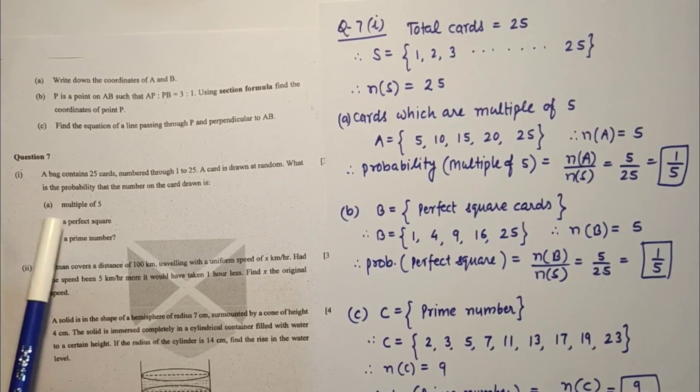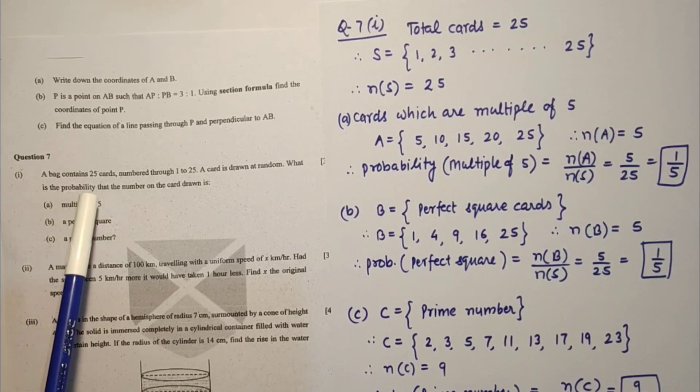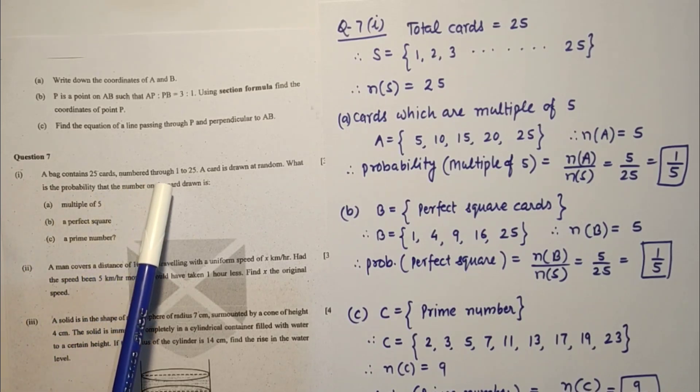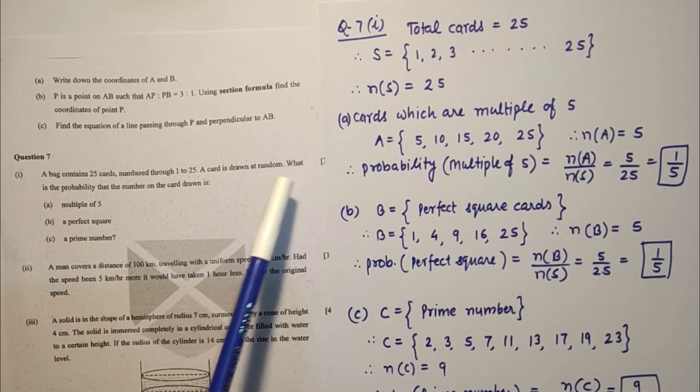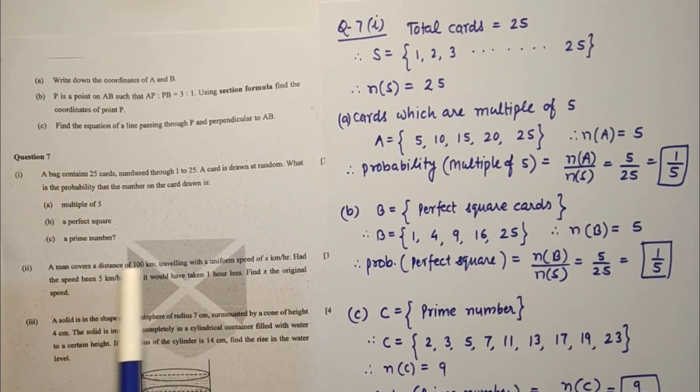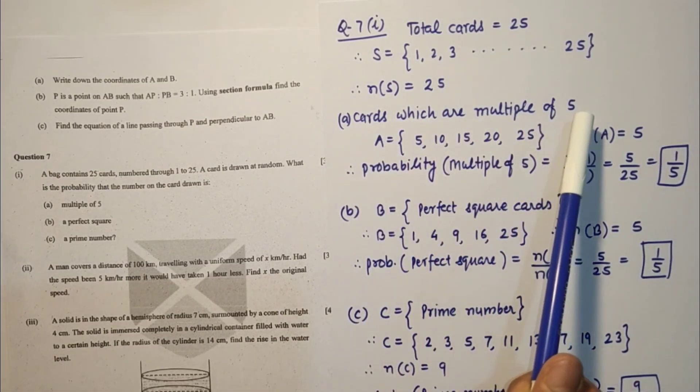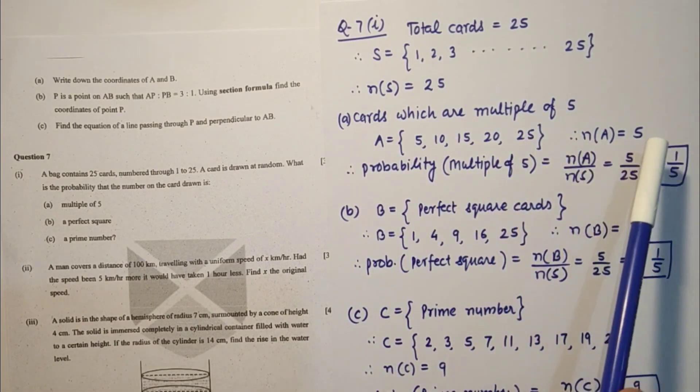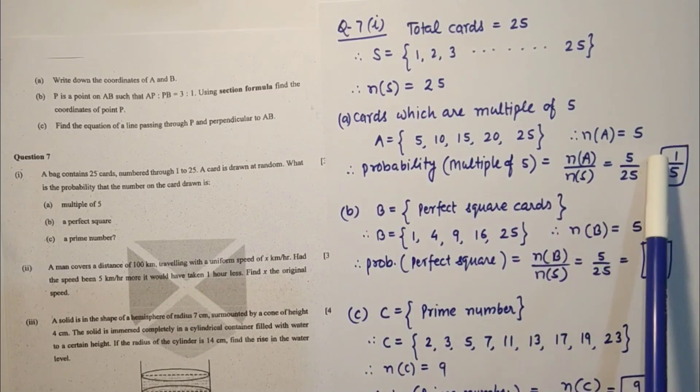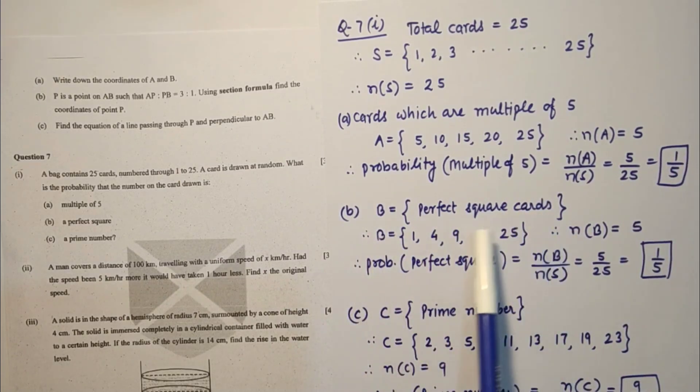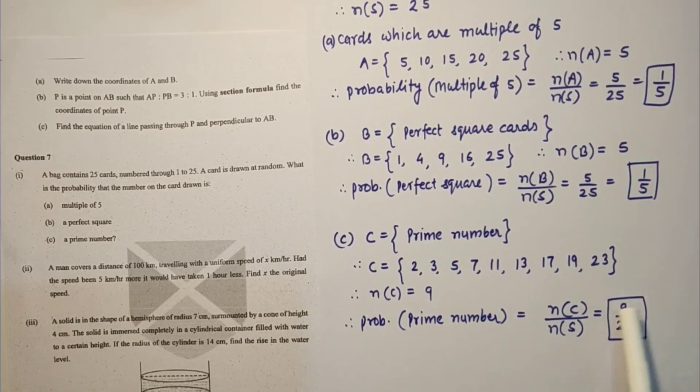Question number 7 first sub part. Probability question. A box contains 25 cards numbered from 1 to 25. A card is drawn at random. N is 25. Cards which are multiple of 5: 5, 10, 15, 20, 25. N is 5. Required probability is 5 by 25, that is 1 by 5. Similarly perfect square numbers, probability is 1 by 5. Prime numbers: 2, 3, 5, 7, 11 and so on, probability of prime number is 9 by 25.